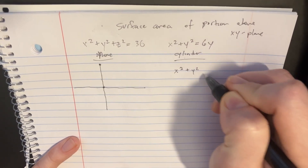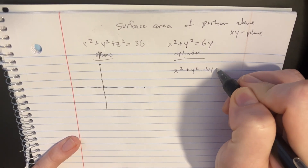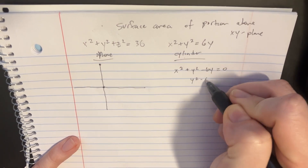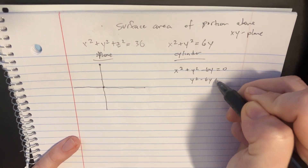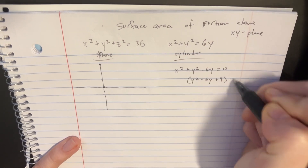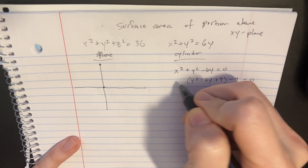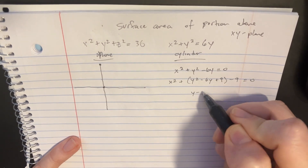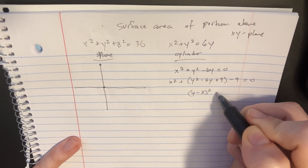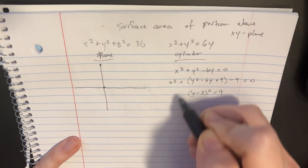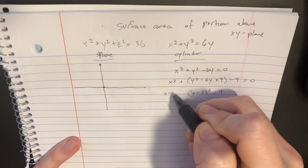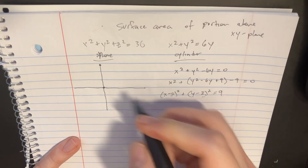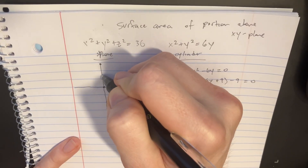x squared plus y squared minus 6y equals 0. We're going to take y squared minus 6y and add 9, then subtract 9 — completing the square. So we'll have y minus 3 squared. We'll move the minus to the other side, and put x minus 0 squared, so that we can see the center is at (0, 3).